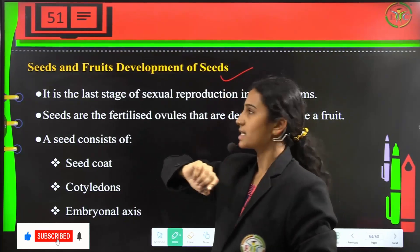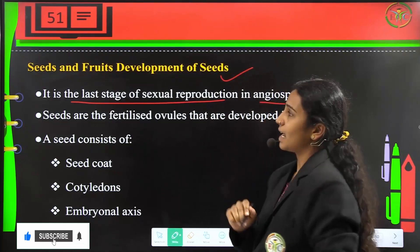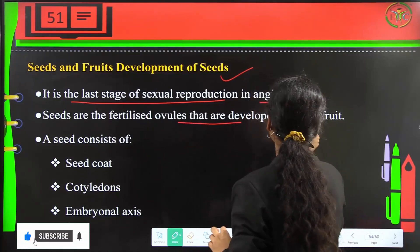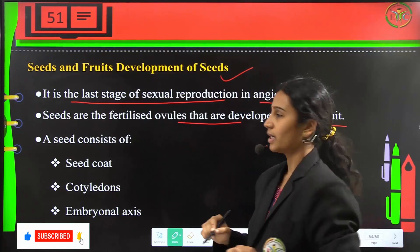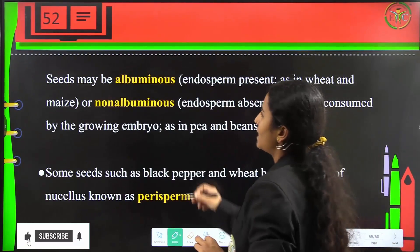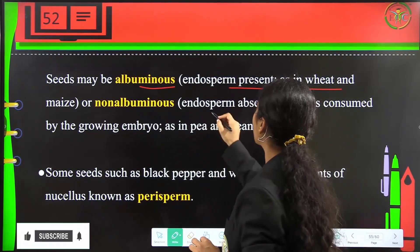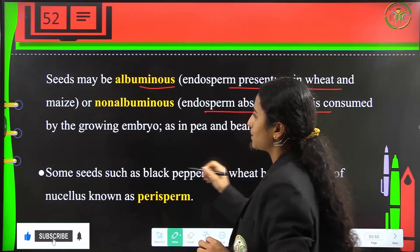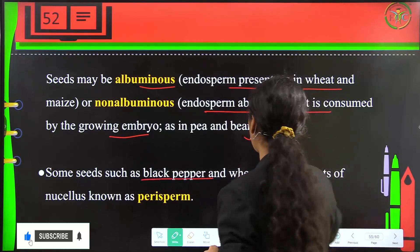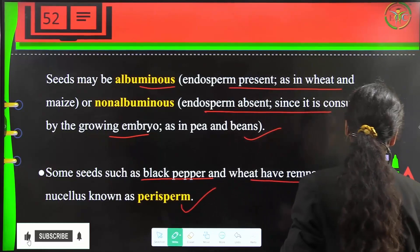Seeds are fertilized ovules which develop inside a fruit, and represent the last stage of sexual reproduction in angiosperms. A seed consists of a seed coat, cotyledons, and an embryonal axis. Seeds may be albuminous, with endosperm present as in wheat and maize, or non-albuminous, with endosperm absent, consumed by the growing embryo as in pea and beans. Some seeds like black pepper and wheat have remnants of nucellus known as perisperm.